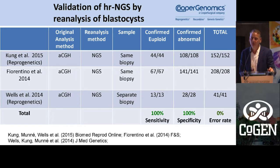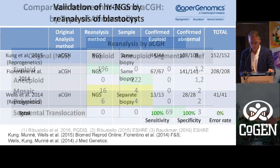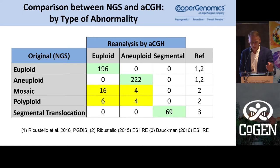We have done extensive validation on this technique, comparing embryos classified by array CGH as abnormal or normal. On those cases you get 100% correlation between the two methods. However, when you have mosaics, they would mostly be classified as euploid by array CGH — 16 were classified as euploid and four as aneuploid by array CGH, and polyploids were not classifiable by array CGH.